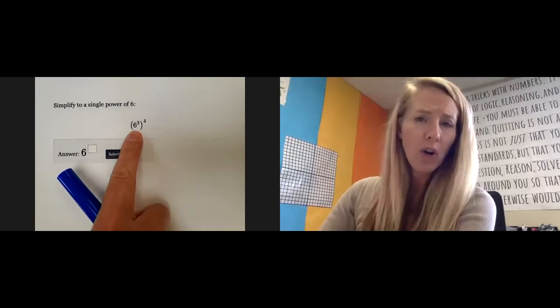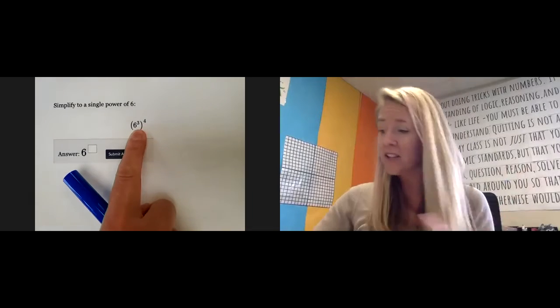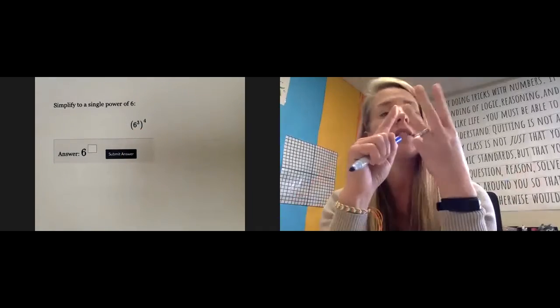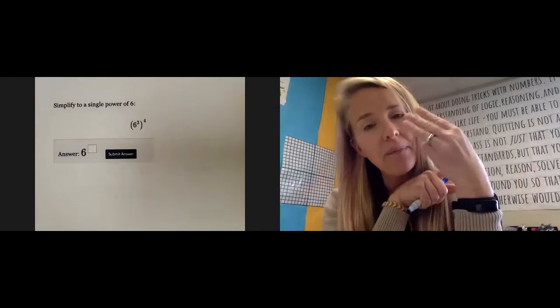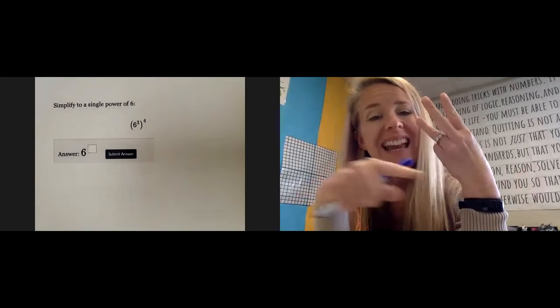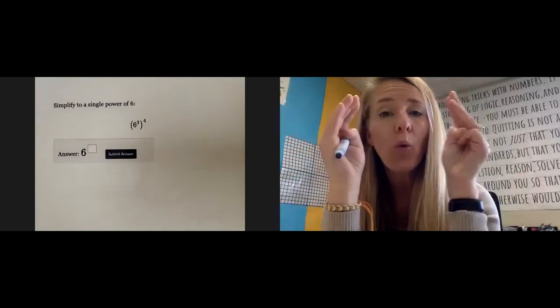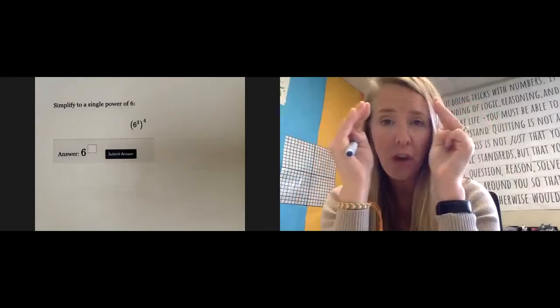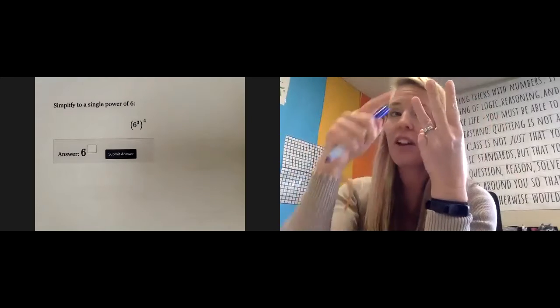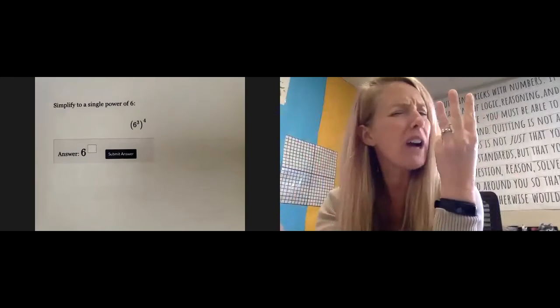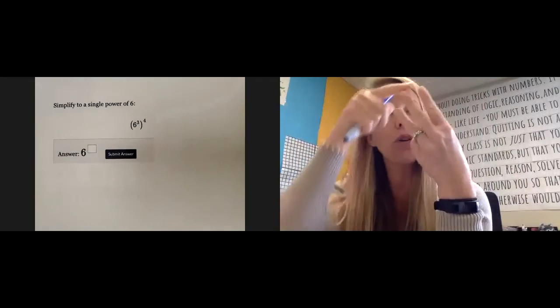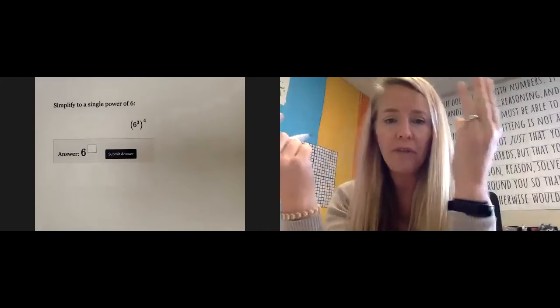We also have when we take the power of a power. So imagine this, you've got 6³. So six times six times six, right? They're at the multiplication party. And then you've got four groups of those. So four groups of six times six times six. So how many sixes would that be? Four groups of three is 12.